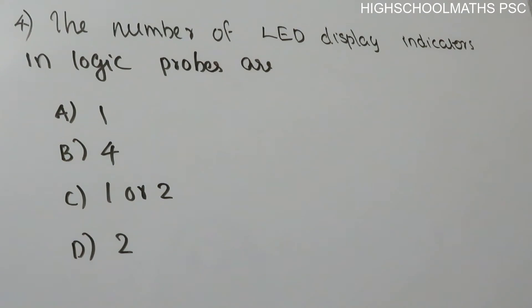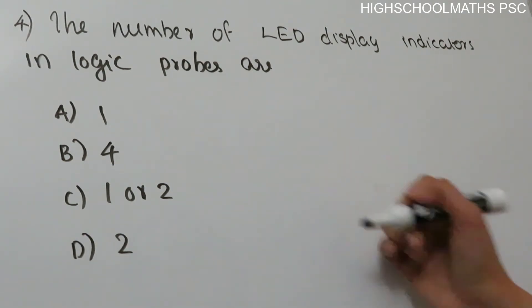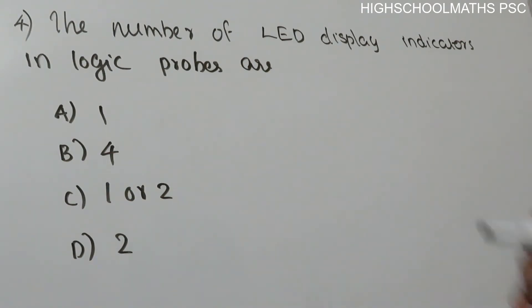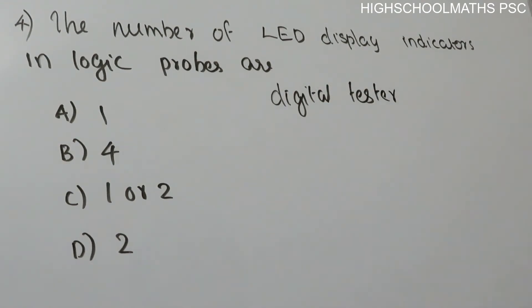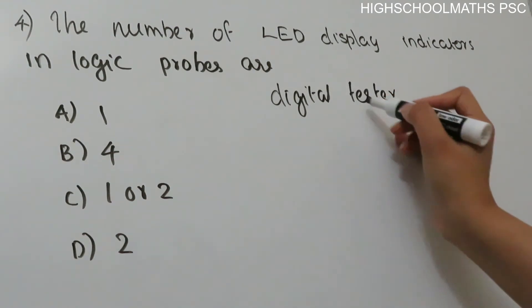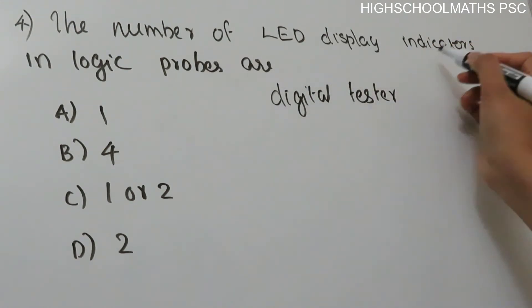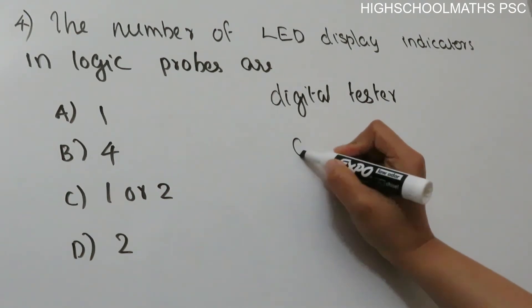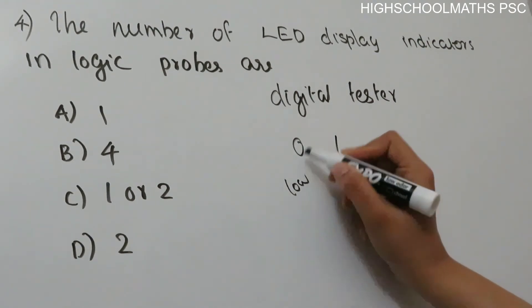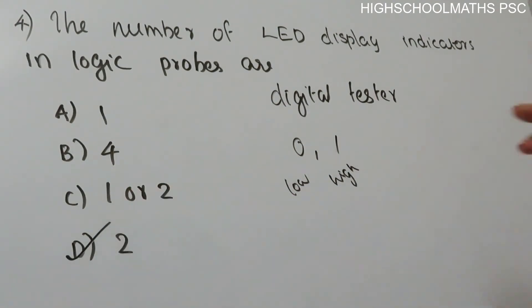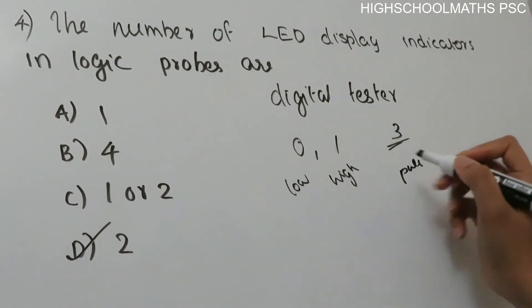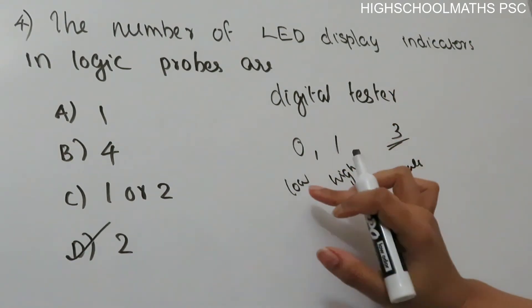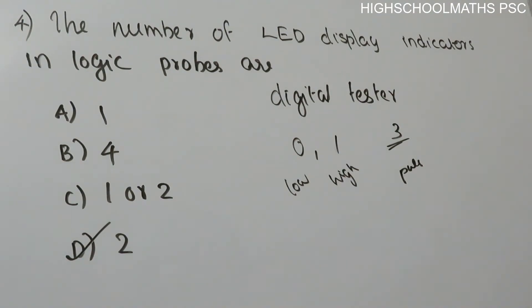Fourth question: the number of LED display indicators in a logic probe. Options: A) 1, B) 4, C) 1 or 2, D) 2. A logic probe is a pen-like structure used in digital circuits. In a digital circuit it indicates logic states: zero and one. The minimum indicators needed are two — one for logic 0 and one for logic 1. So Option D — 2 — is the answer.